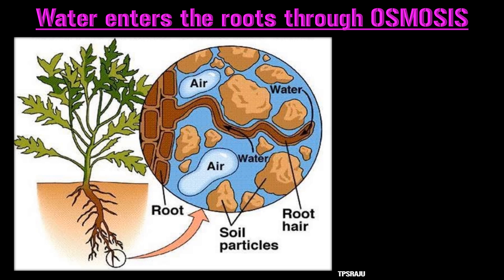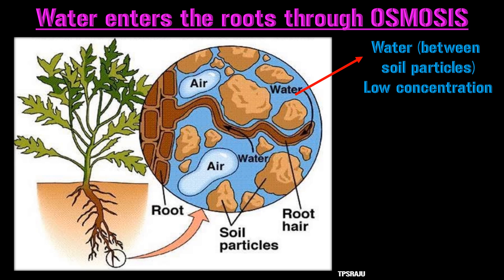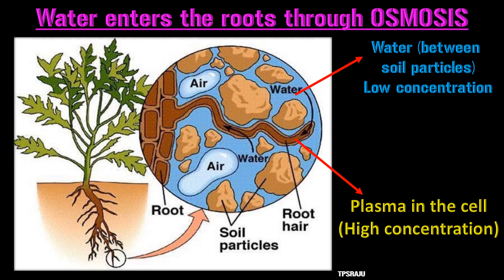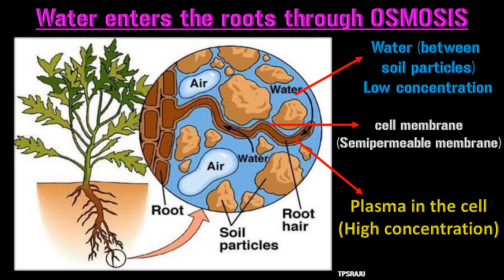Osmosis plays a major role in absorption of water by root hairs. Root hairs grow out into the spaces between the soil particles and are surrounded by moisture. Soil water is more dilute than the plasma of the cells of root hairs, and the cell membrane acts as a semi-permeable membrane. Due to osmosis, water moves from the soil into the cells of the root hair.